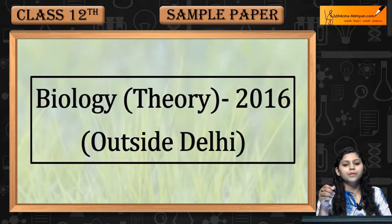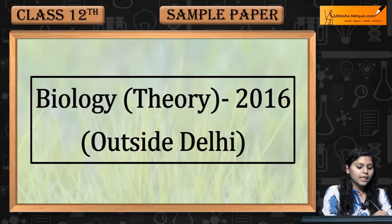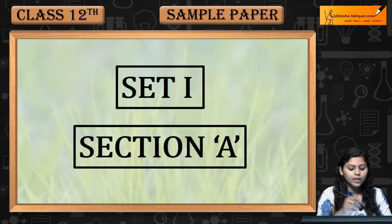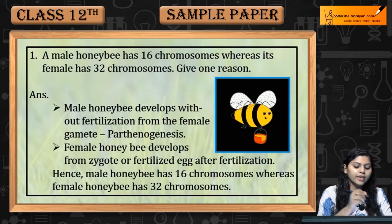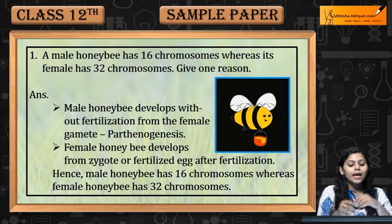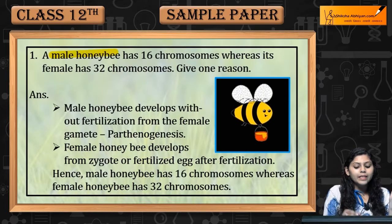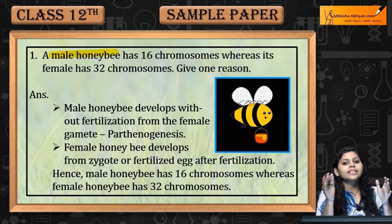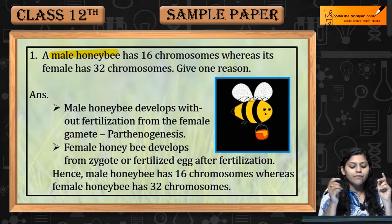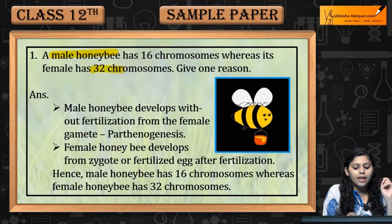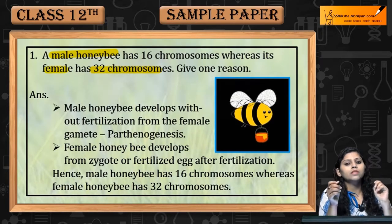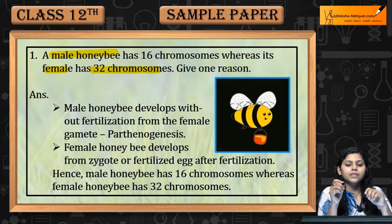Sample Paper 2016 Outside Delhi, Set 1, Section A, Question 1. A male honey bee has 16 chromosomes whereas a female has 32 chromosomes. Give one reason.